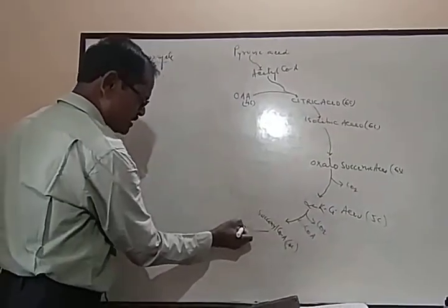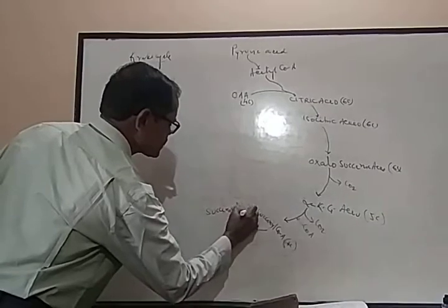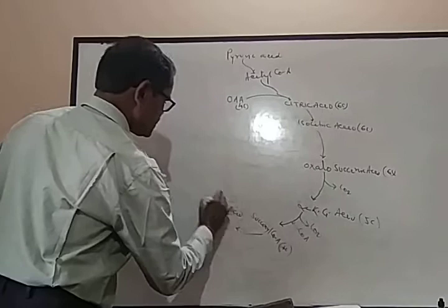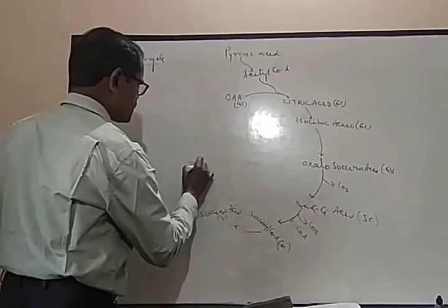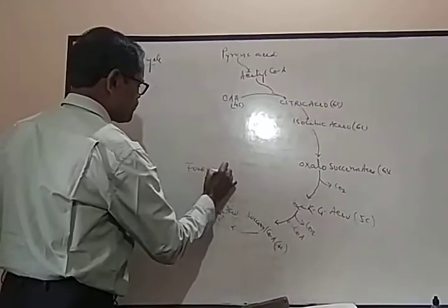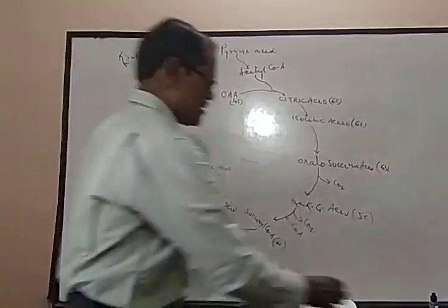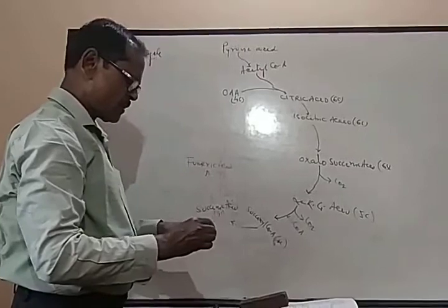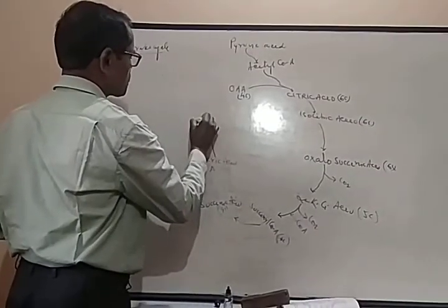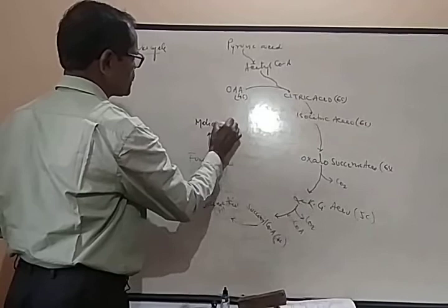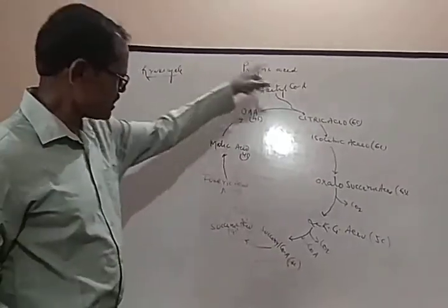Succinyl coenzyme A converts into succinic acid. Succinic acid converts into fumaric acid, a 4-carbon containing compound. Fumaric acid converts into malic acid, which ultimately converts into oxaloacetic acid. In this way, the Krebs cycle takes place.